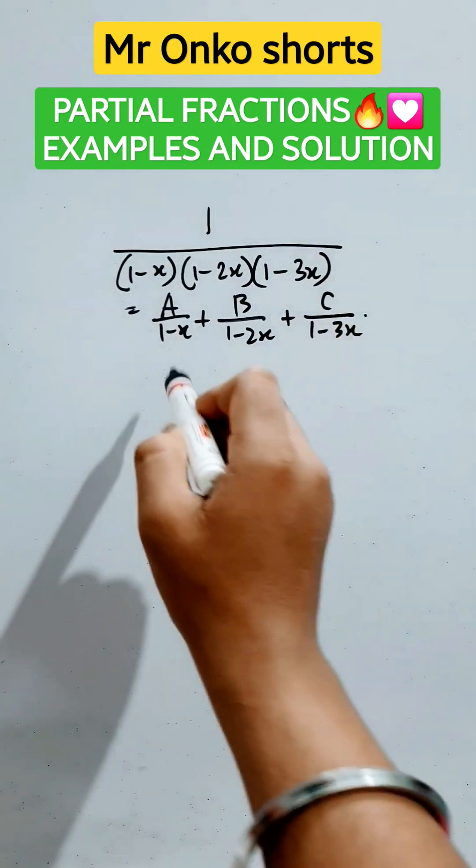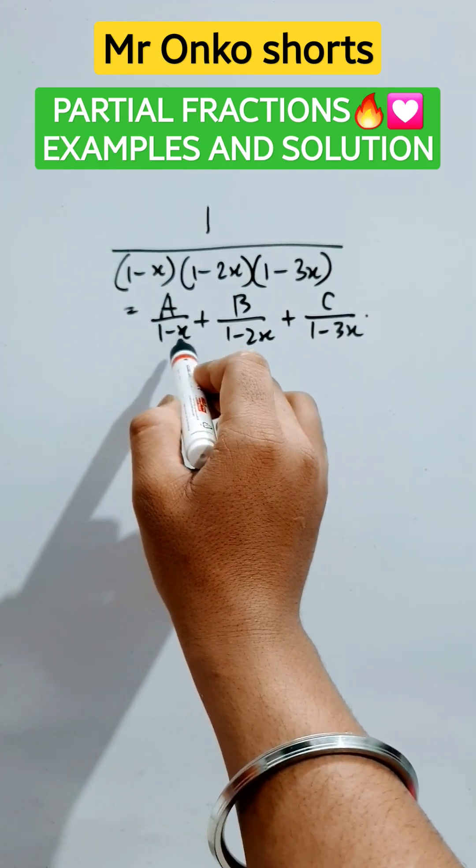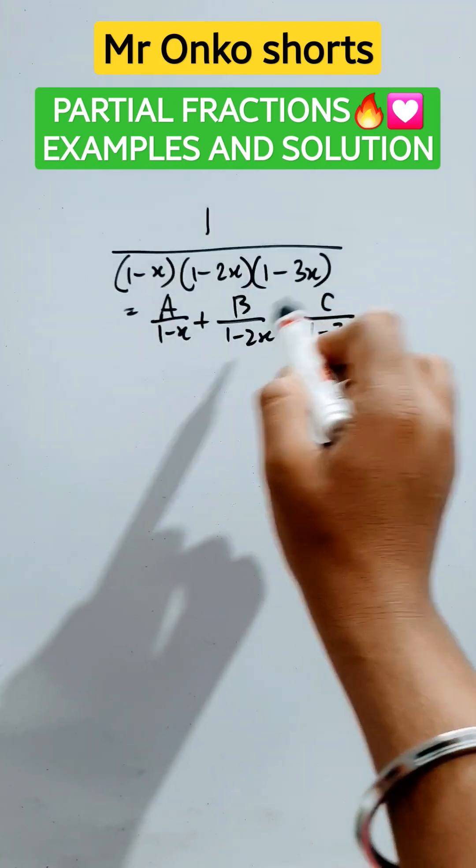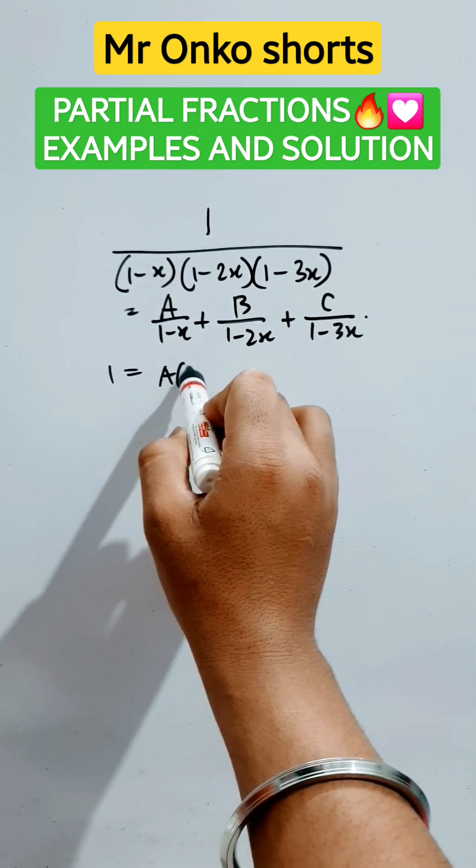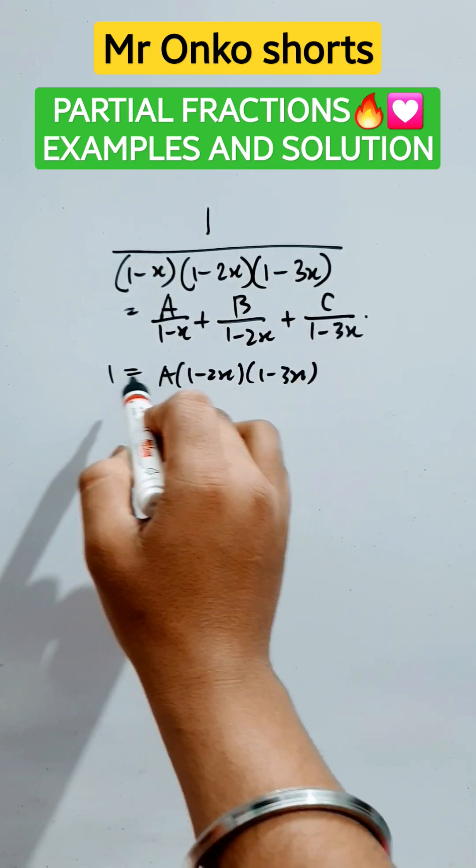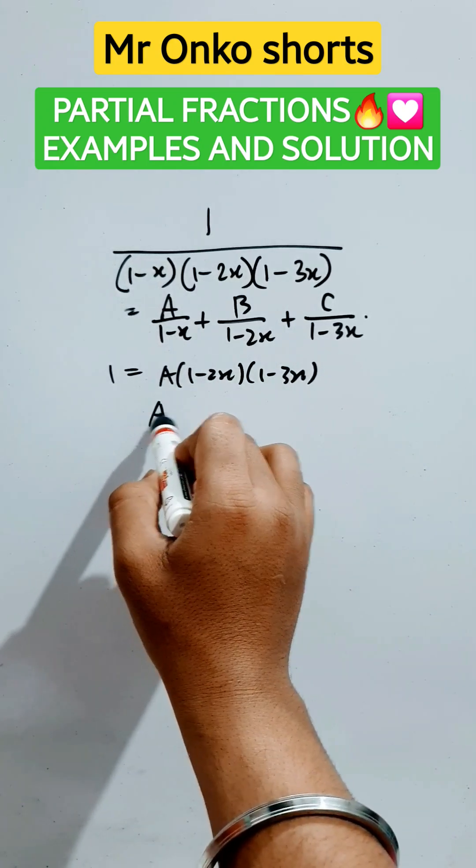Now since 1 minus x is under A, so if we put x equals to 1, then these two will be vanished and it will be 1 equals A into 1 minus 2x into 1 minus 3x. Now if we put x equals to 1 here, then A will be equals to 1/2.